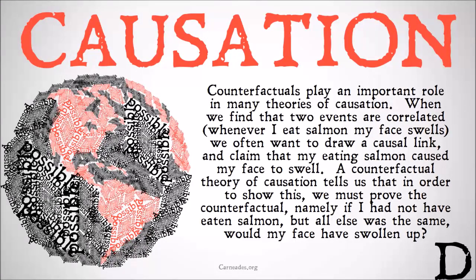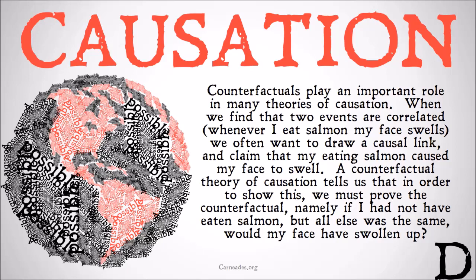Counterfactuals play an important role in many theories of causation. When we find out that two events are correlated — whenever I eat salmon, my face swells — we often want to draw a causal link and claim that my eating salmon caused my face to swell. A counterfactual theory of causation tells us that in order to show this, we must prove the counterfactual: namely, if I had not eaten salmon, but all else was the same, would my face have swollen up? I'm not going to go into theories of causation in detail here; I'm just trying to demonstrate how these theories can be used.